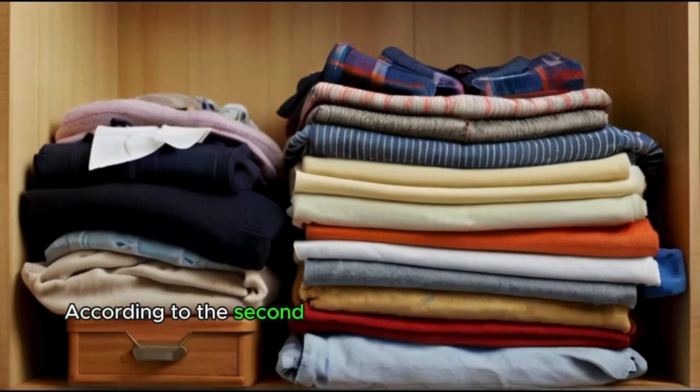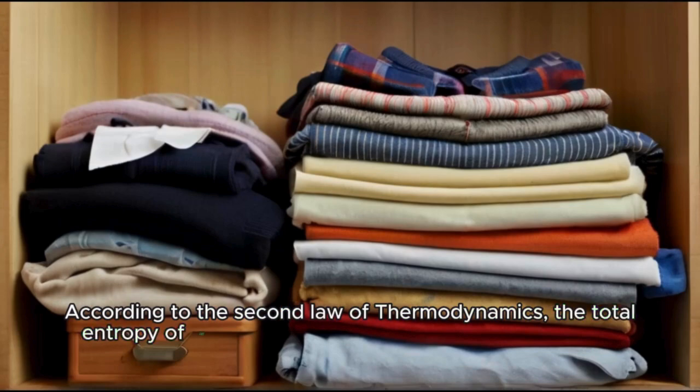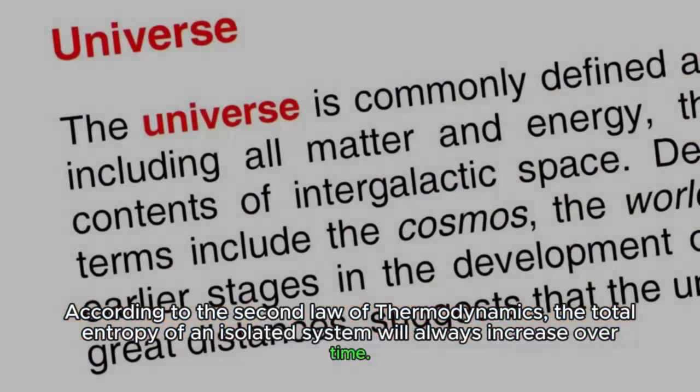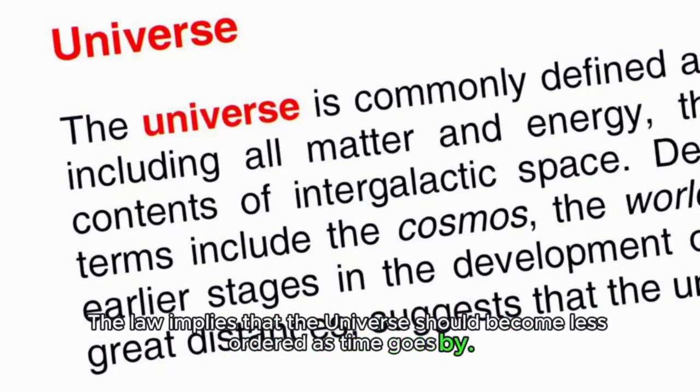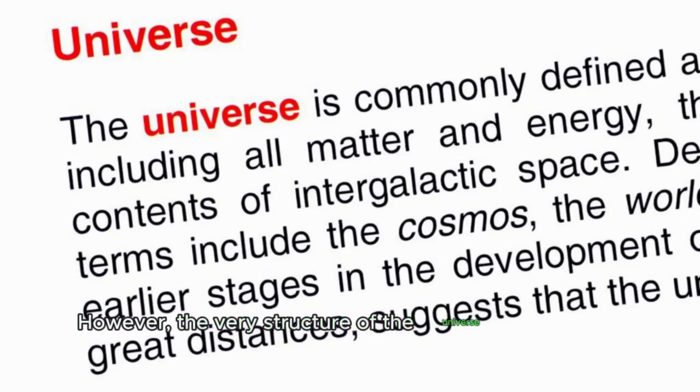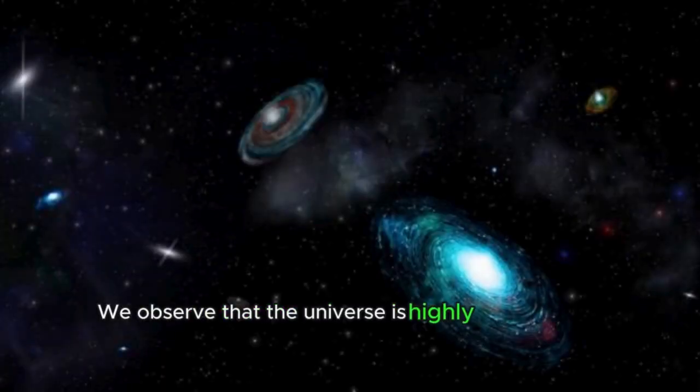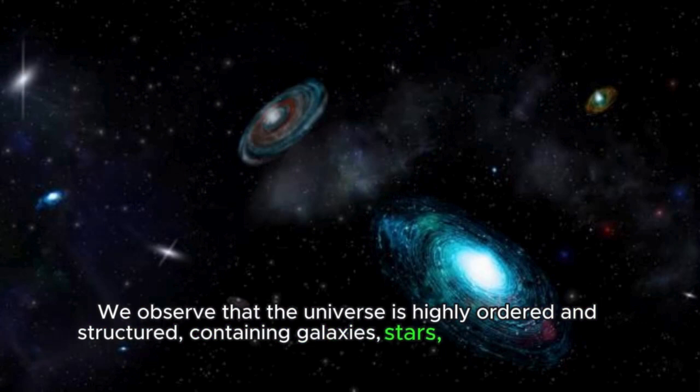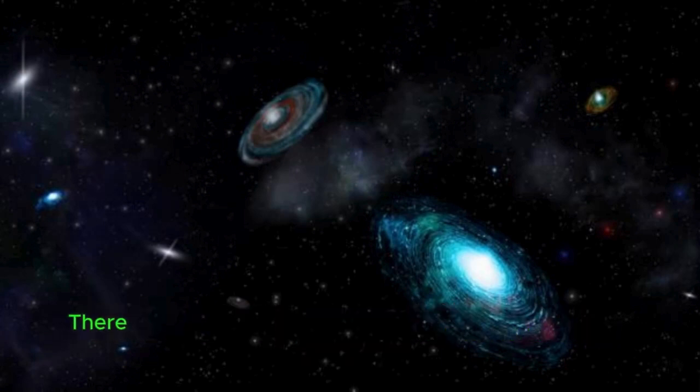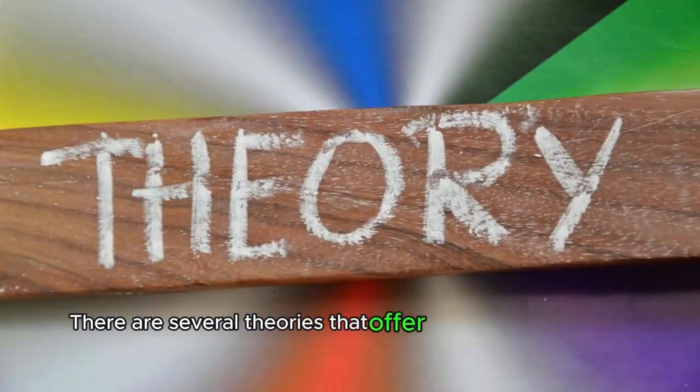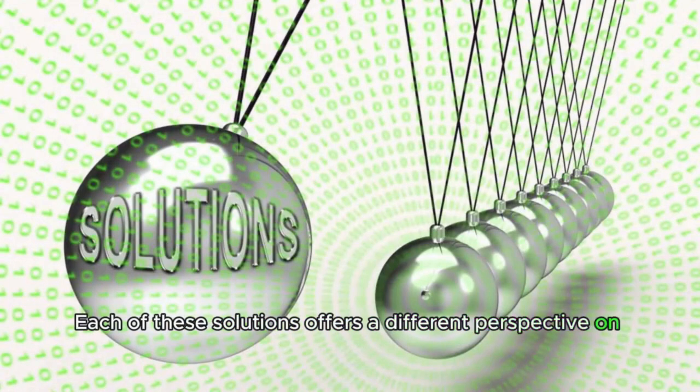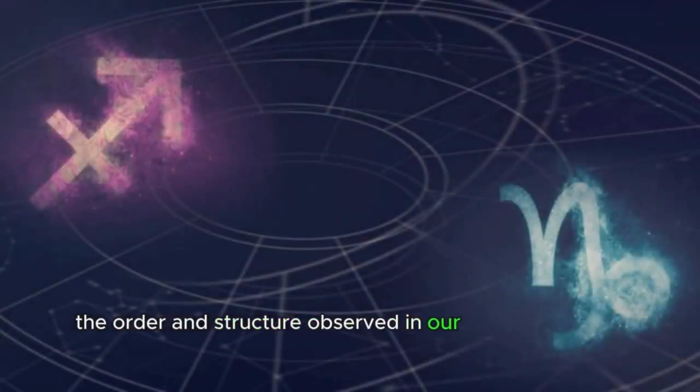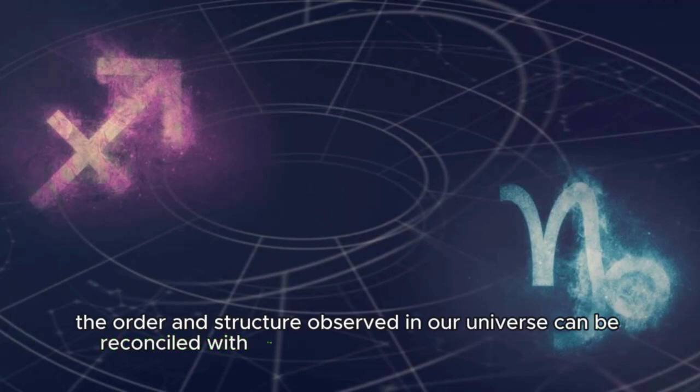According to the second law of thermodynamics, the total entropy of an isolated system will always increase over time. The law implies that the universe should become less ordered as time goes by. However, the very structure of the universe contradicts this idea. We observe that the universe is highly ordered and structured, containing galaxies, stars, planets, and even life forms. There are several theories that offer possible solutions to this paradox. Each of these solutions offers a different perspective on how the order and structure observed in our universe can be reconciled with the second law of thermodynamics.